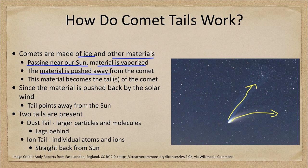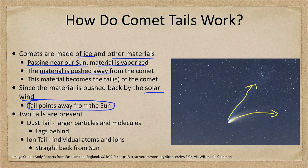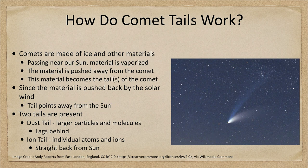Since this is material that is pushed back by the Sun, it is the solar wind and the Sun that is doing this. The tail always points away from the Sun. So where is the Sun in this image? The Sun has to be off in this direction, opposite to where we see the tails. That means we will always see the tails opposite in the sky to the Sun.